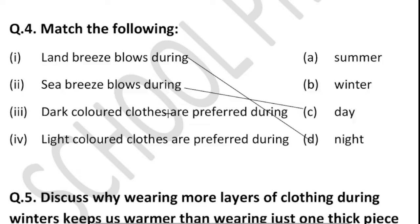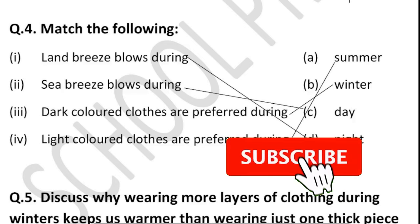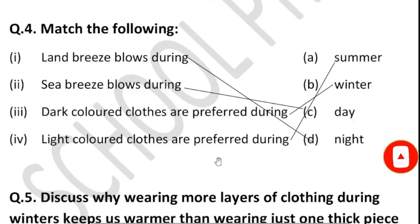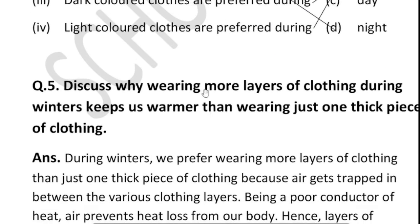Dark-colored clothes are preferred in winter, because dark colors absorb heat and help keep our body warm. Light-colored clothes are preferred during summer, because light colors reflect heat away from our body, making us feel less warm.